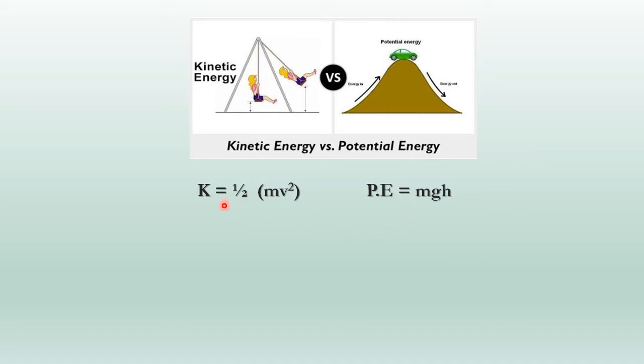Here are the formulas for kinetic energy and potential energy. Kinetic energy is equal to half mv squared, where m is the mass and v is the velocity. And the potential energy is equal to mgh, where m is mass, g is the gravitational force and h is the height. So wherever height is involved from the earth surface, there potential energy will be created in your body.